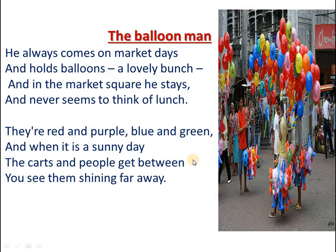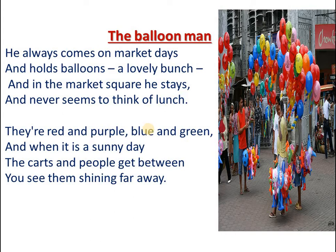Now I will explain this poem. In the first stanza, the poet is telling that he always comes on market days — he will not come on Sunday, only when the market is open. He holds balloons, a lovely bunch, and in the market square he stays. He never seems to think of lunch, meaning he even avoids taking his lunch while selling balloons — so we can say he is doing very hard work. They are red, purple, blue, and green — here we are talking about the colors of the balloons.